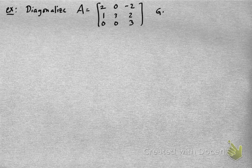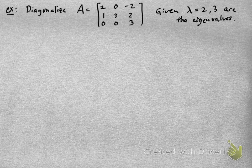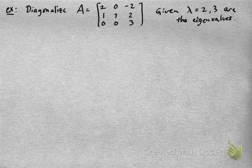Let's take a look at a concrete 3 by 3 example. Let's try to diagonalize this matrix A, which is [2, 0, -2; 1, 3, 2; 0, 0, 3]. Just to make things a little bit easier so that we don't have to factor a characteristic polynomial, suppose you're also given the eigenvalues. In this case, we're given that the eigenvalues are 2 and 3.